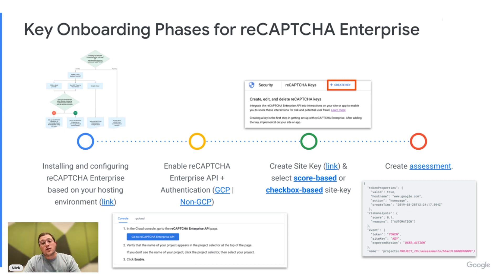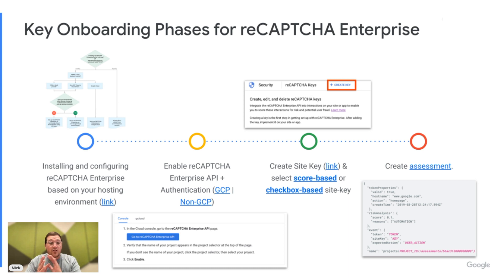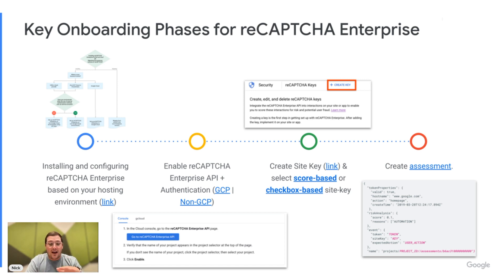Next, we'll talk about enabling the ReCAPTCHA Enterprise API and auth. Again, for GCP and non-GCP customers alike, there are step-by-step docs listed right there. Third, you're going to want to create your site key — there's a link that walks step-by-step through everything you need to know. You'll select score-based or checkbox-based, and the differentiating factors are also noted in the documentation there.